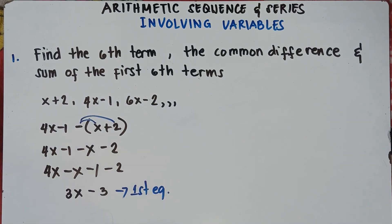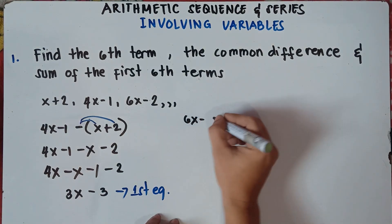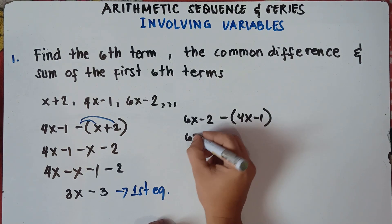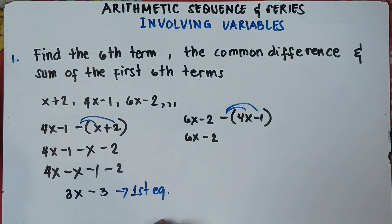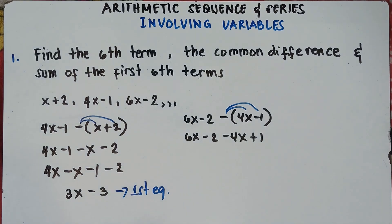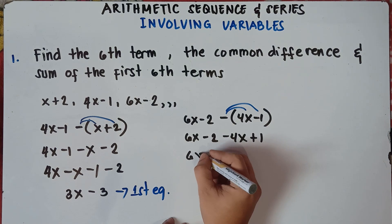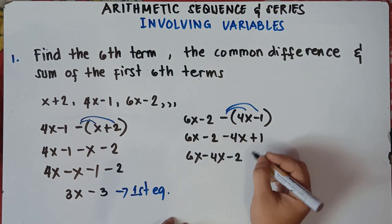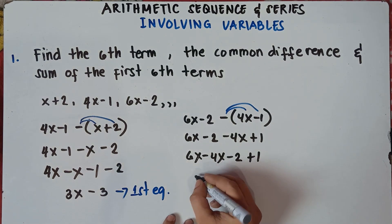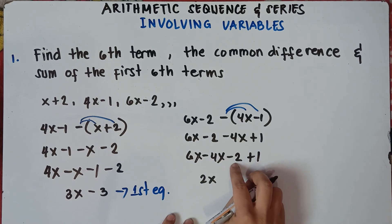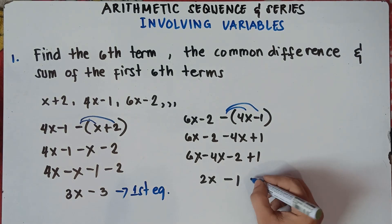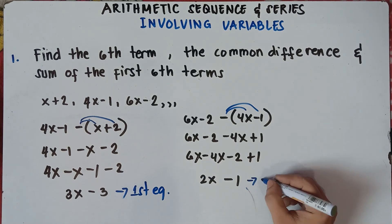Now let's get the second equation. This will be 6x minus 2 minus (4x minus 1). Distribute the negative sign: negative times 4x is negative 4x, negative times negative 1 is positive 1. Arrange and combine like terms: 6x minus 4x equals 2x, and negative 2 plus 1 equals negative 1. So our second equation is 2x minus 1.